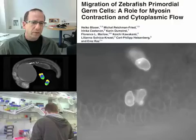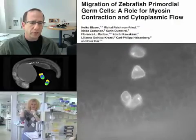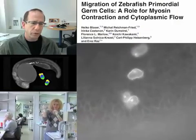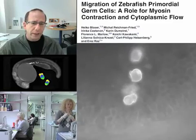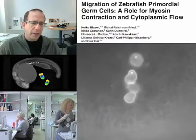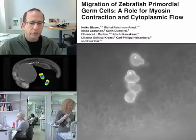Understanding how blebs form is an important step in understanding the motility of cells that form this kind of protrusion. What we are trying to understand now is how blebbing activity is integrated with regulation of adhesion and generation of traction forces to allow forward movement of the cell.